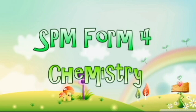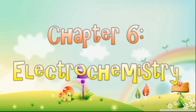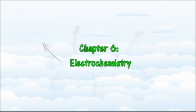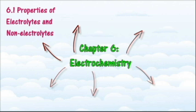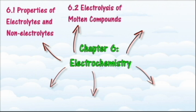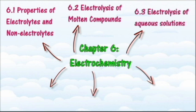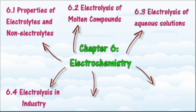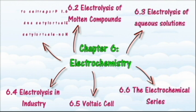SPM form for chemistry chapter 6 electrochemistry. In this video we will summarize the expected learning outcomes of chapter 6 electrochemistry in the form of a concept map. In this chapter we will learn about electrochemistry — the conversion of electrical energy into chemical energy and vice versa. There are six main sections: 6.1 properties of electrolytes and non-electrolytes, 6.2 electrolysis of molten compounds, 6.3 electrolysis of aqueous solutions, 6.4 electrolysis in industry, 6.5 voltaic cell, and 6.6 the electrochemical series.